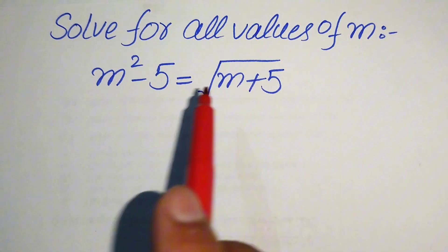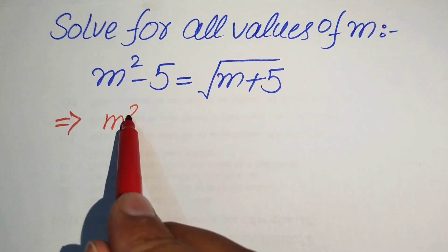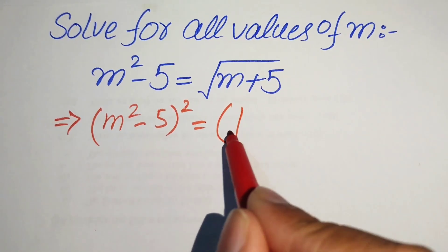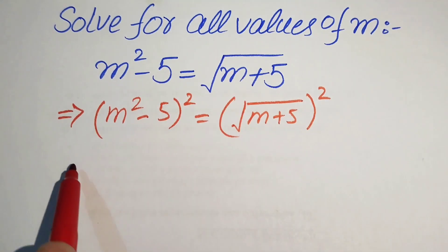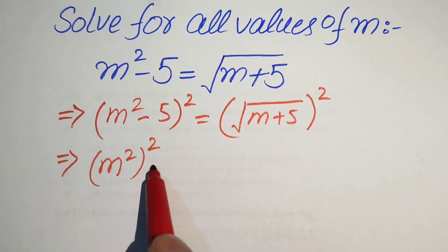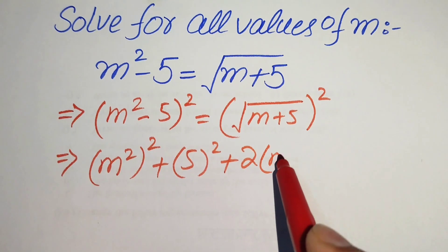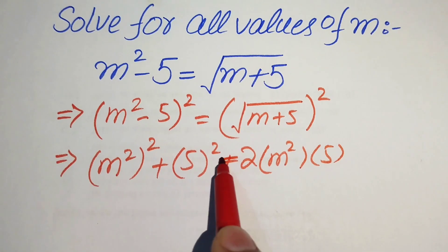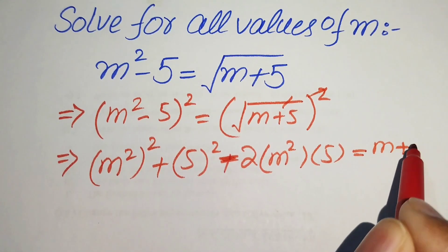First we remove this radical sign. To remove the radical sign we take squarings on both sides, written as (m² - 5)² equals (√(m+5))². On the left hand side we use the nice square identity: (a - b)² = a² + b² - 2ab, where a is m² and b is 5. The right side simplifies and we get m plus 5.